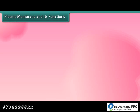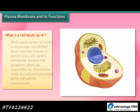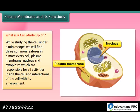What is a cell made up of? While studying the cell under a microscope, we will find three common features in almost every cell: plasma membrane, nucleus and cytoplasm, which are responsible for all activities inside the cell and interactions of the cell with its environment.